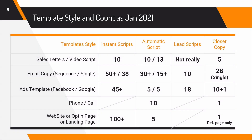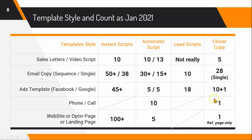Here is the comparison table used across all software reviews. For sales letters and video letters, Instant Script, Automatic Script, and Copy Closer are the top runners-up. Lead Script is less suited for that. For email copy sequences, Instant Script scores well, and Automatic Script has great content in the pro version. For Facebook and Google ads, Facebook is more popular in this section. For phone call scripts, Automatic Script or Copy Closer are the options.